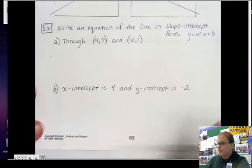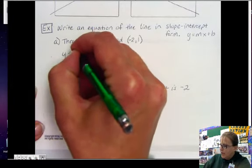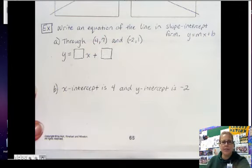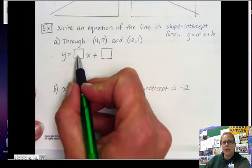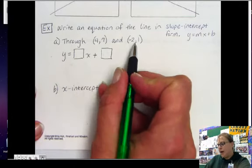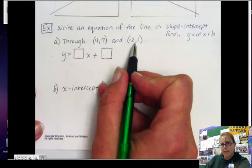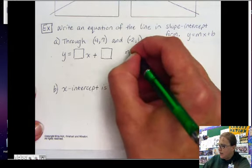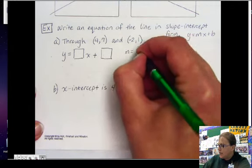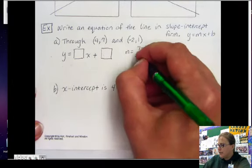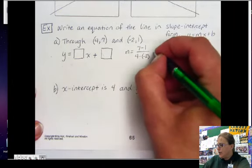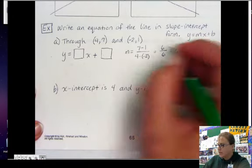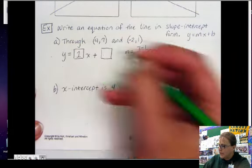So what I would do is, first of all, I want to think y equals something x plus something. We need to fill in those somethings. The first something is your slope. Well, I'm not given my slope, but I need to find my slope. So slope, remember from a previous lesson, is y is minus, so m is going to be 7 minus 1 over, or x is minus, 4 minus negative 2. So that's going to be 6 over 6, which equals 1. So my slope is 1, so we can fill that in.